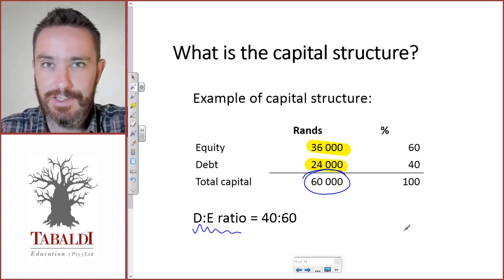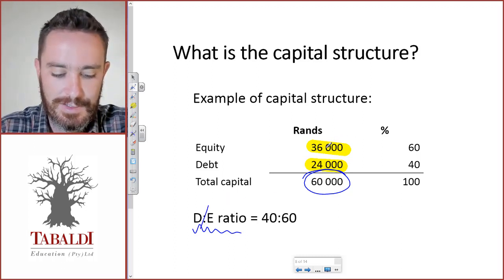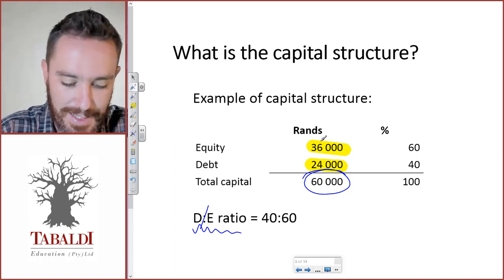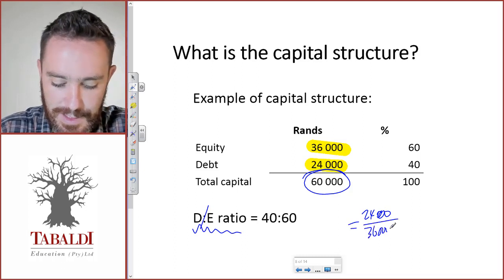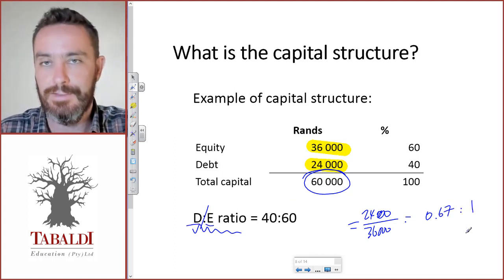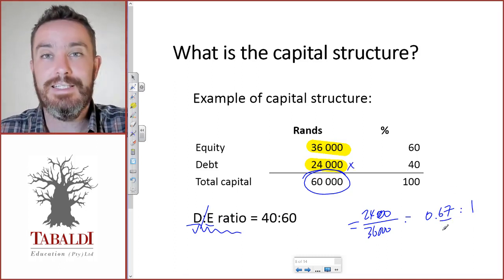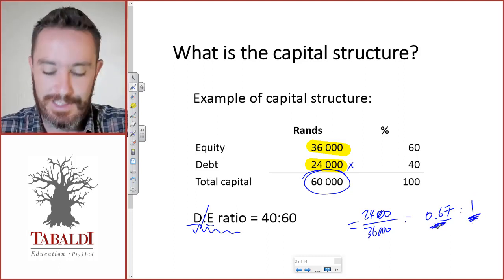The debt-equity ratio is just like the name says: debt divided by equity. So we divide the debt of 24,000 by the equity of 36,000, and that gives us 0.67. We write it as debt to equity.